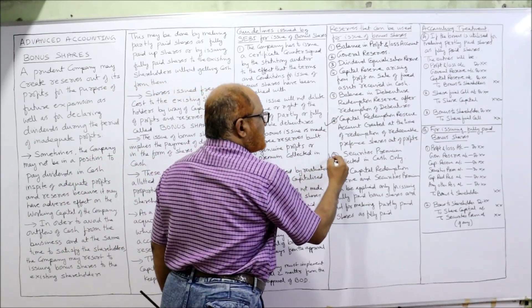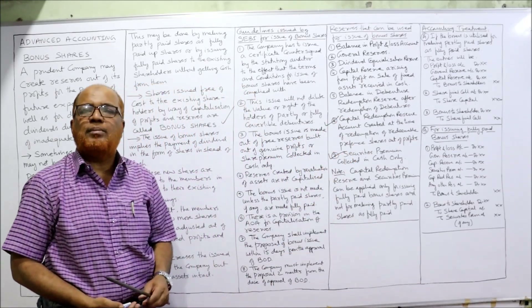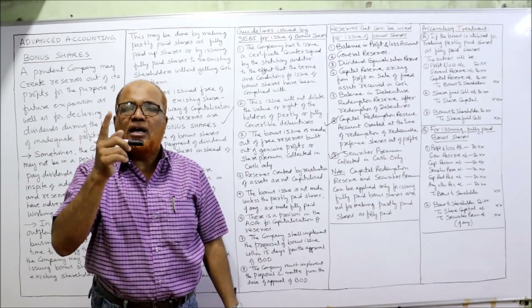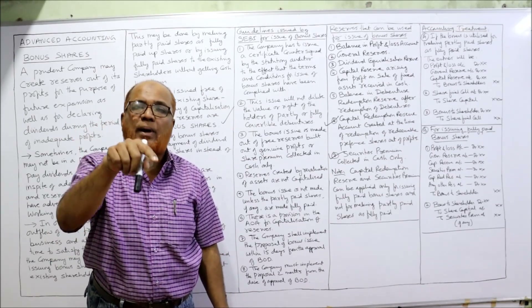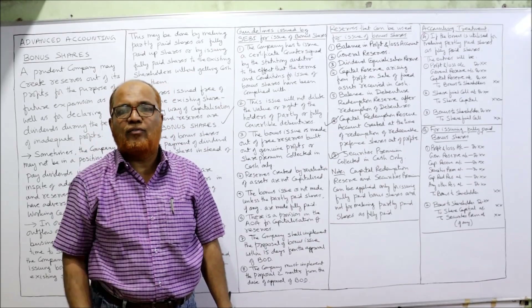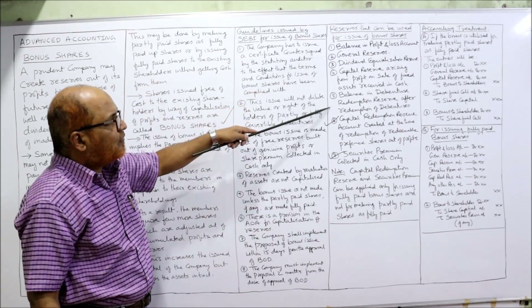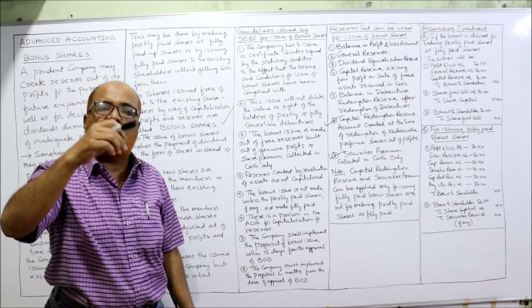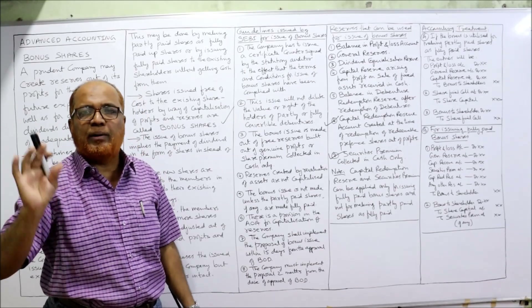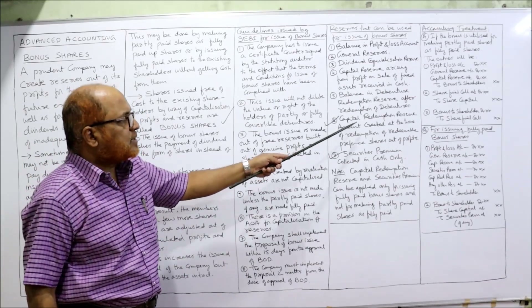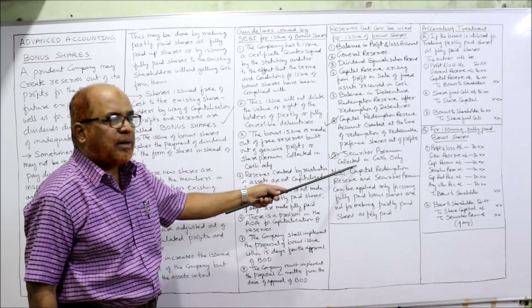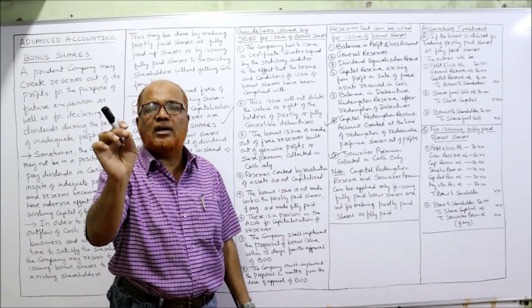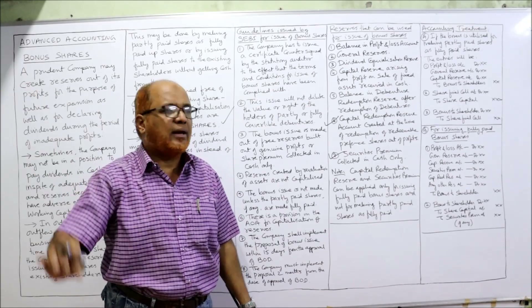Important note: the 6th and 7th reserves — capital redemption reserve account and security premium collected in cash — can be used only for issuing fully paid bonus shares. They cannot be used for converting partly paid shares into fully paid. Whereas the first five reserves can be used for converting partly paid into fully paid or for issuing fully paid bonus shares.